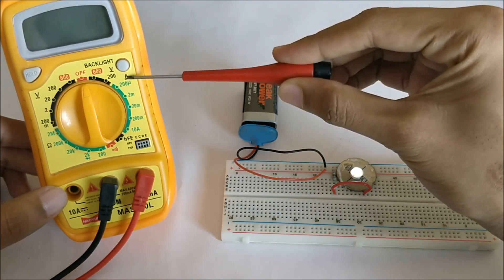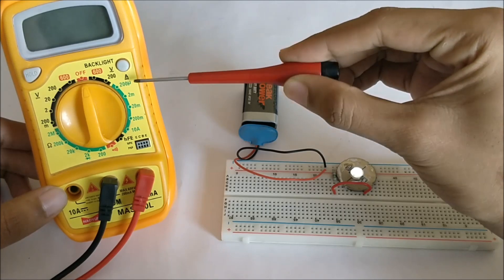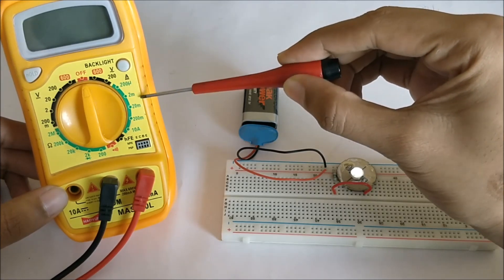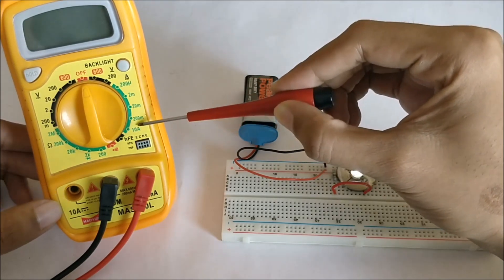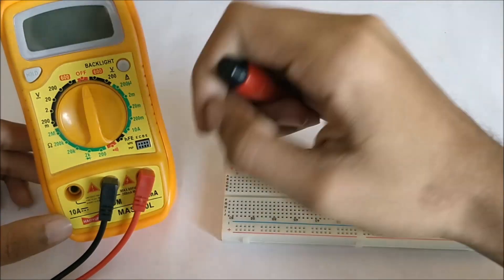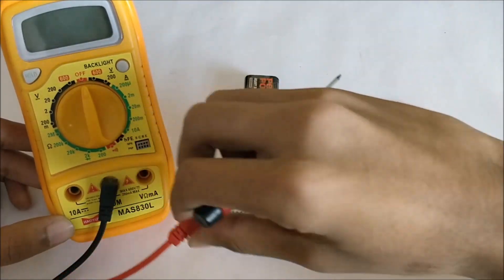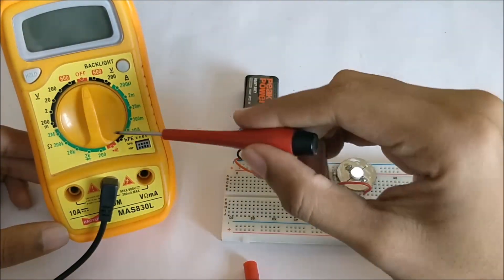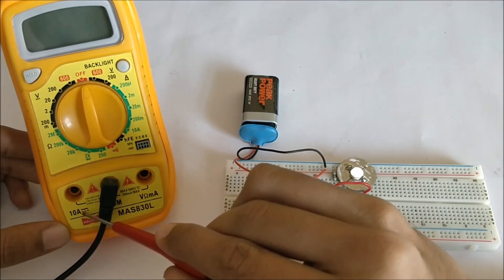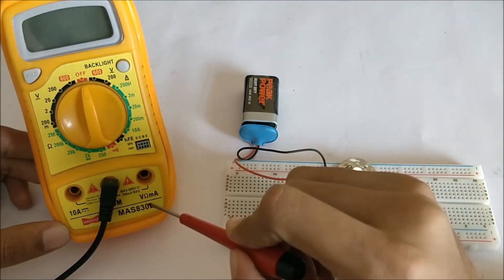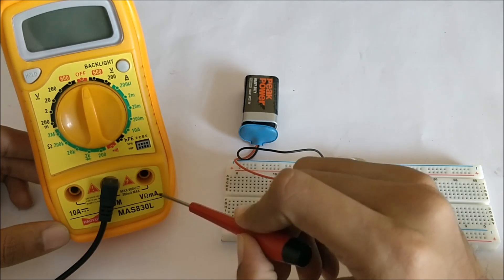We have the DC current symbol here which is an A with a line under it, and we have these ranges underneath. The maximum range is 10 amps where we have to use this slot. We have another slot here which is commonly used for voltage as well. As you can see, for 10 amps alone it is mentioned that this slot has to be used, and for the other current ratings this milliamp symbol is provided over here.